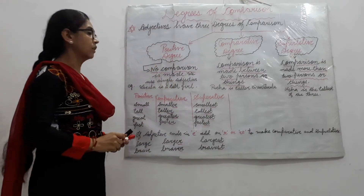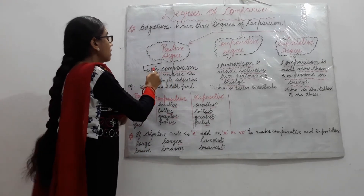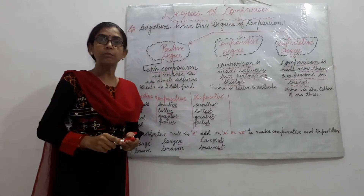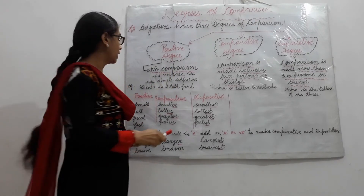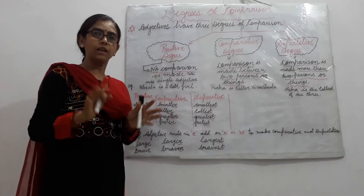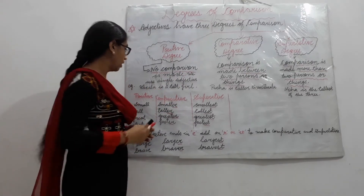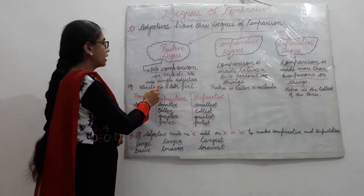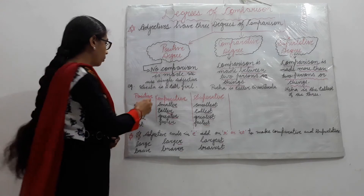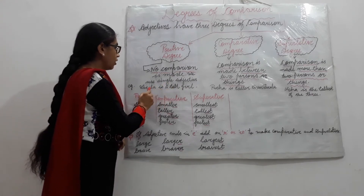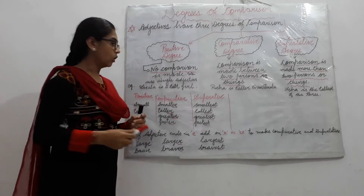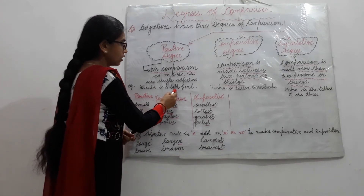Positive degree. In positive degree, no comparison is made. Positive degree mein koi comparison nahi hota hai. We use a single adjective. For example, 'Sarla is a tall girl.' We are talking about the quality of Sarla. Sarla ki comparison kisi se nahi ki ja rahi hai. Toh yeh positive degree use kare hai.